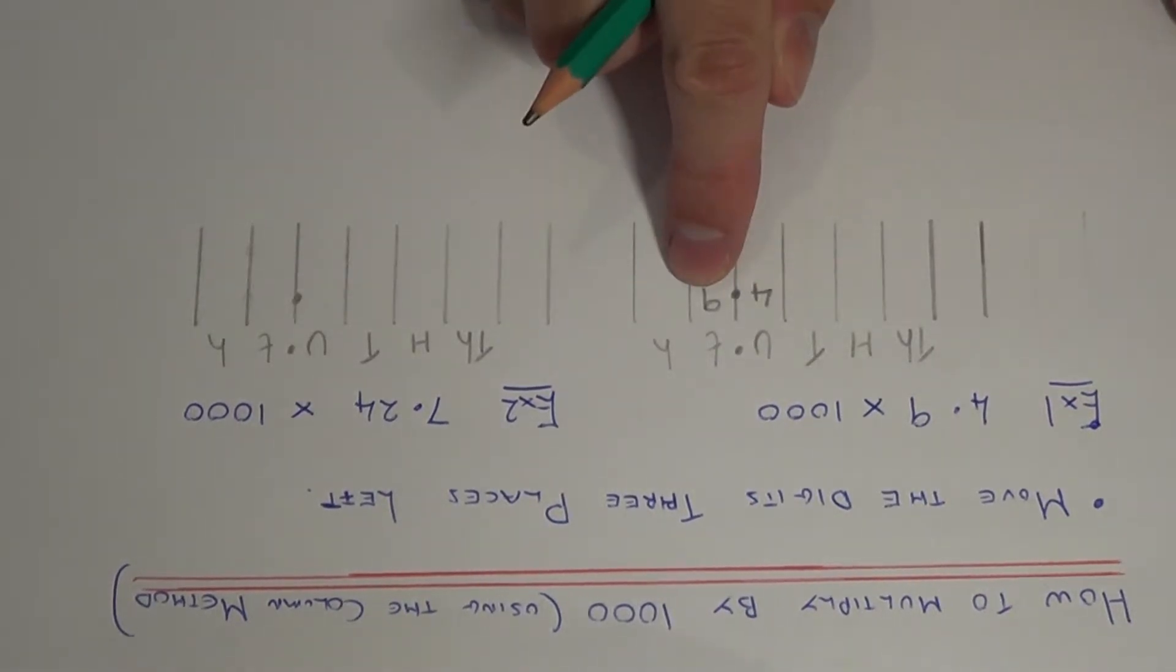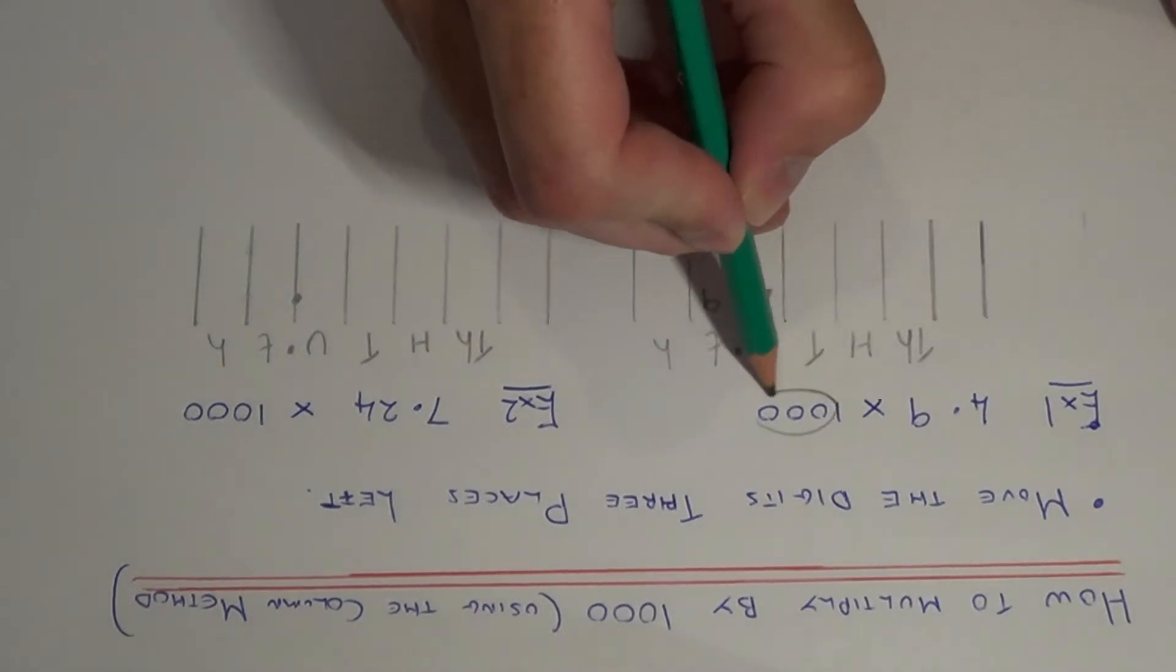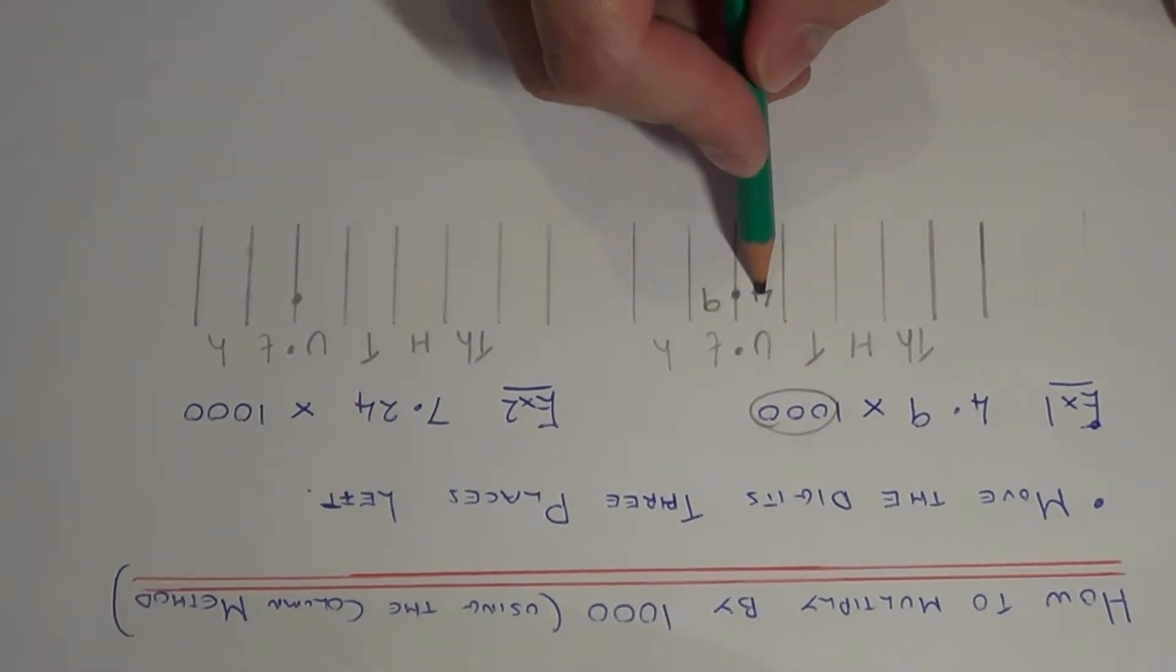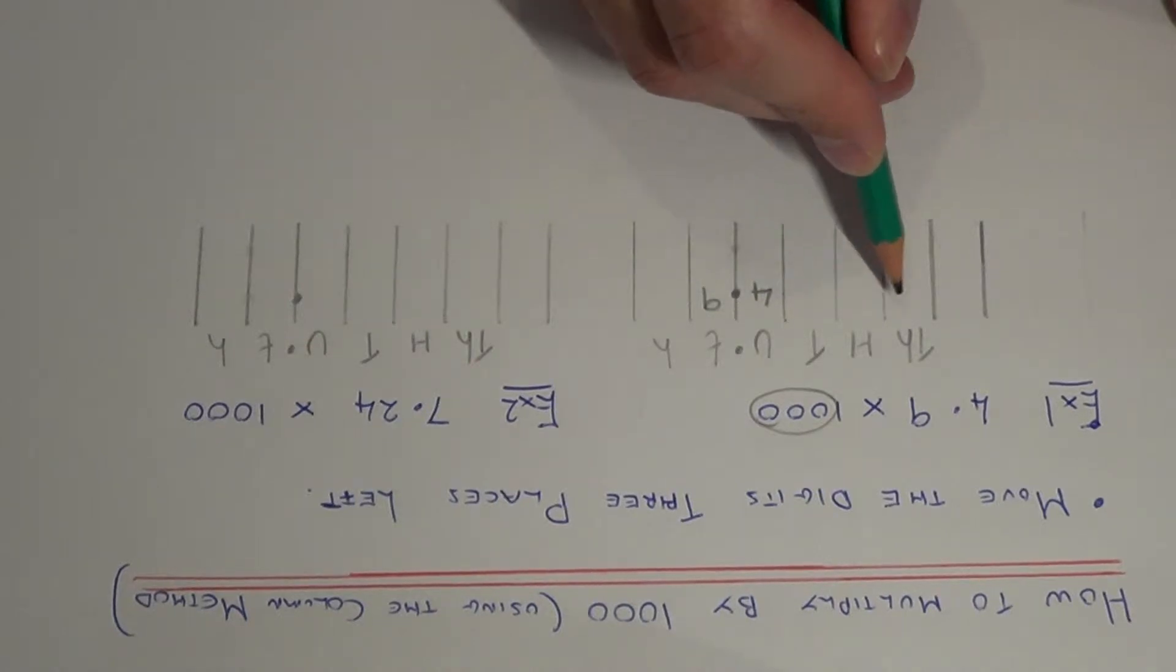So each one of these digits has got to move three places to the left because we're multiplying by a thousand. So let's move the four three columns to the left. One, two, three. So the four will go in the thousands column.